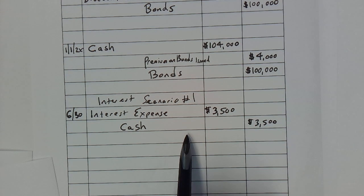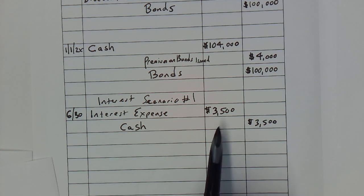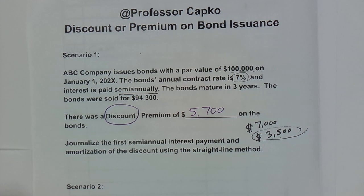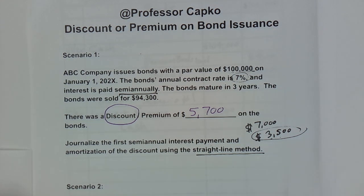If the bond was sold at par value — in other words, exactly at its face value of $100,000 — then we would be done and there'd be nothing else to do. However, this one was sold with a discount, and it asks us to journalize the first semiannual interest payment and the amortization of the discount using the straight-line method. Just like straight-line depreciation, each payment period we have an equal amount amortized — you're chipping away the same amount each time.